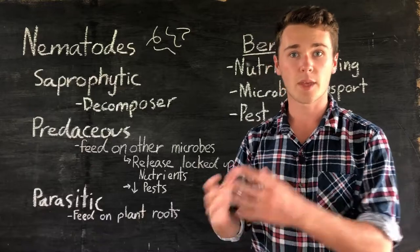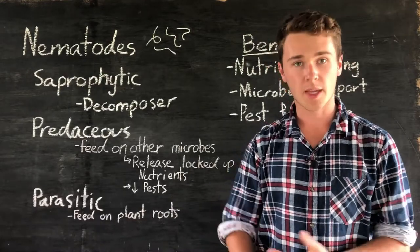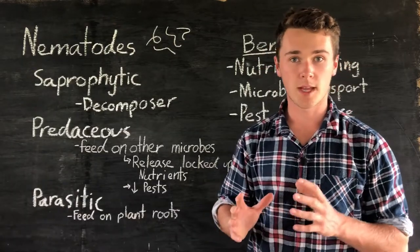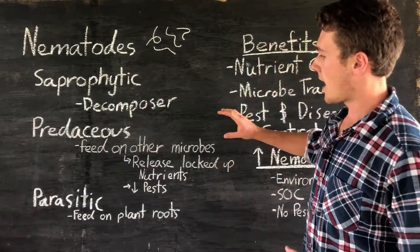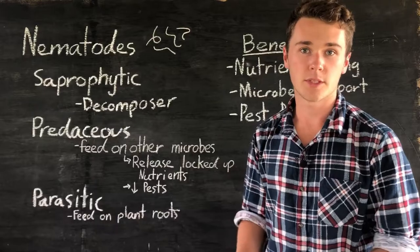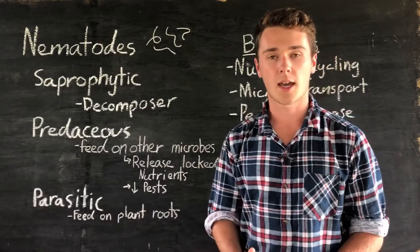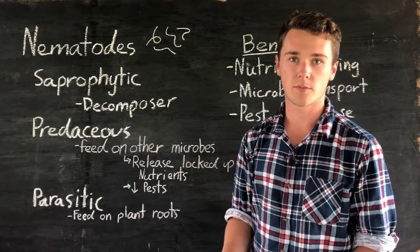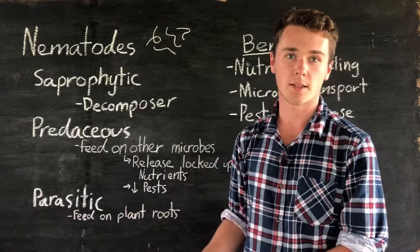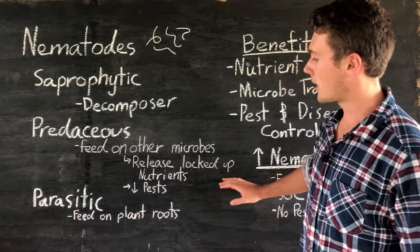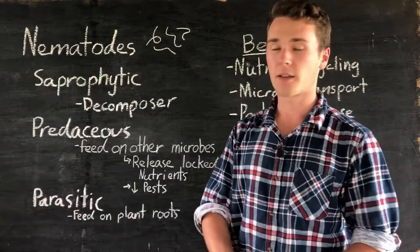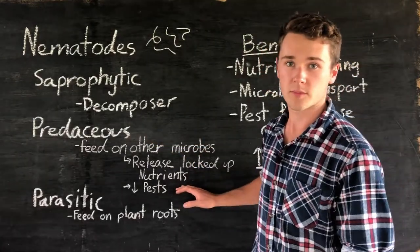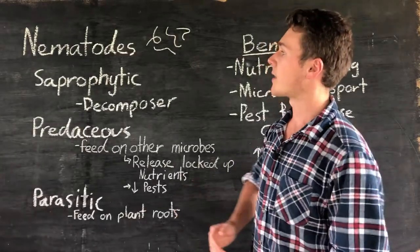Next we have predaceous nematodes. That means they eat other microbes — so that includes our bacteria, our fungi, and other nematodes. There are two really big important benefits from this. Firstly, it releases nutrients from other microbes. Nutrients can get almost locked up in microbes, and by the nematodes eating these, they take in too much of these nutrients and excrete them, essentially freeing up nutrients. The other benefit is that these predaceous nematodes will be seeking out and eating our pest microorganisms, including fungi, bacteria, and other nematodes.